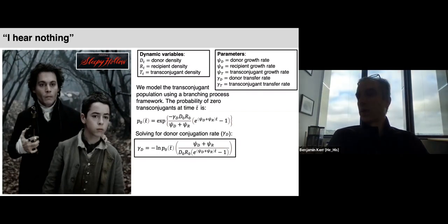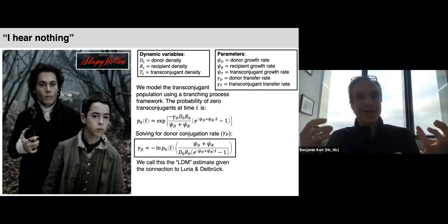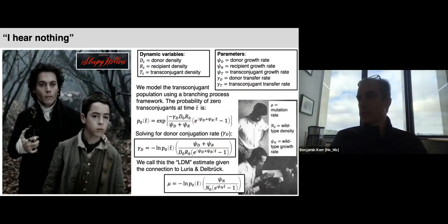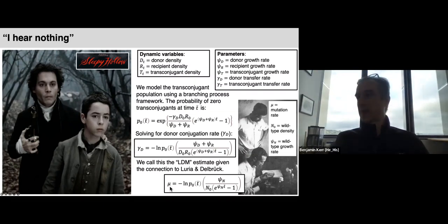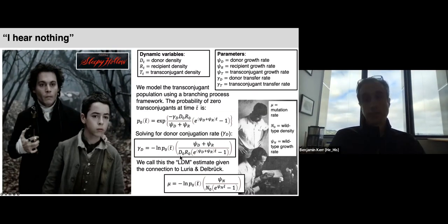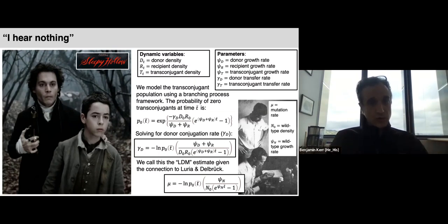This expression turns out to be quite similar in important ways to the mutation rate estimate by Luria and Delbrück — we call our approach the LDM (Luria-Delbrück Method) because of this structural similarity. In the mutation rate expression, the role of wild-type growth rate is played by the sum of donor and recipient growth rates; the role of initial wild-type density is played by the product of initial donor and recipient densities; and P0 — the probability of absence of transconjugants — mirrors the probability of absence of mutants in the original Luria-Delbrück approach.